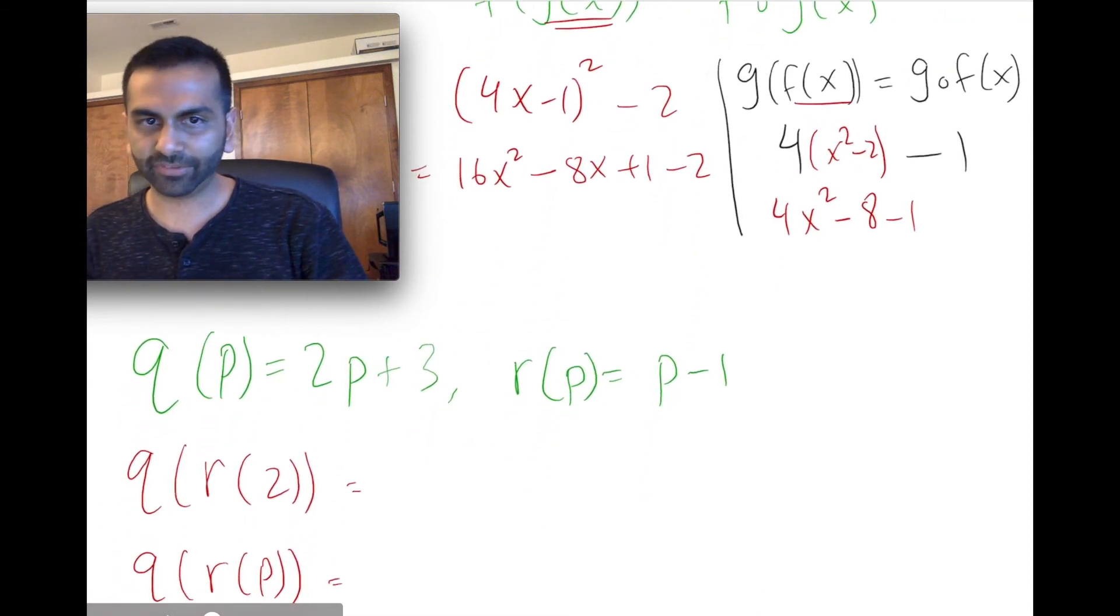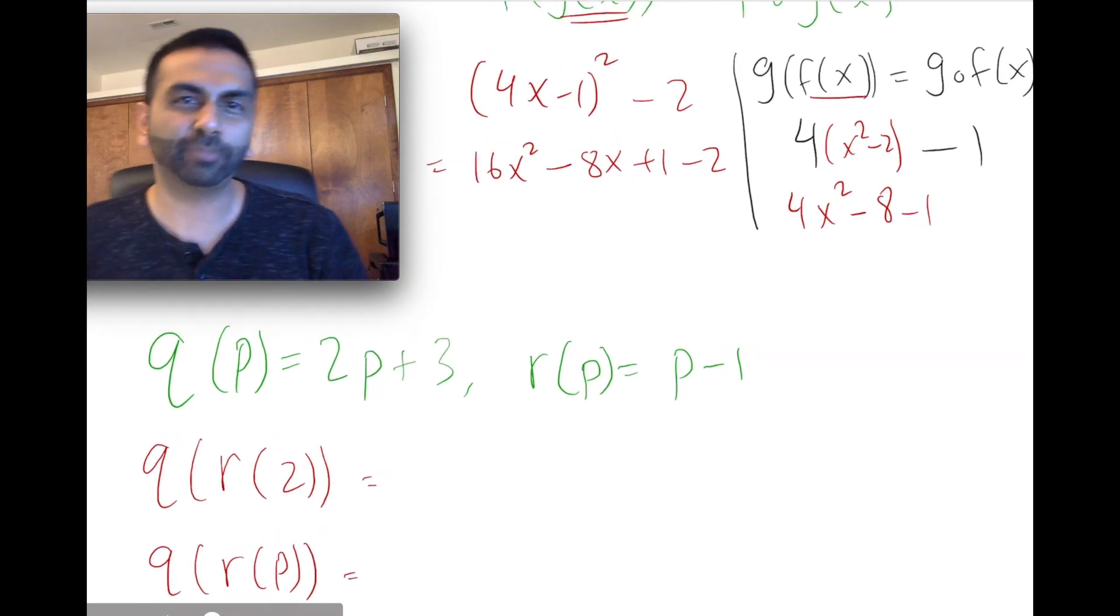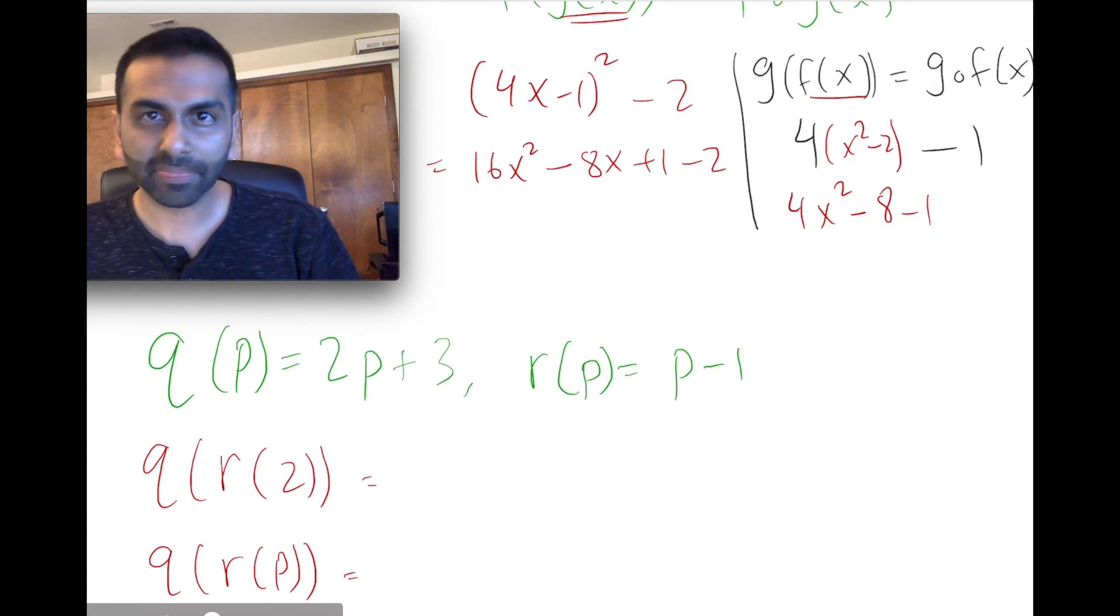A couple more examples here. Let's say you're given this setup: q of p is 2p plus 3, and r of p is p minus 1.